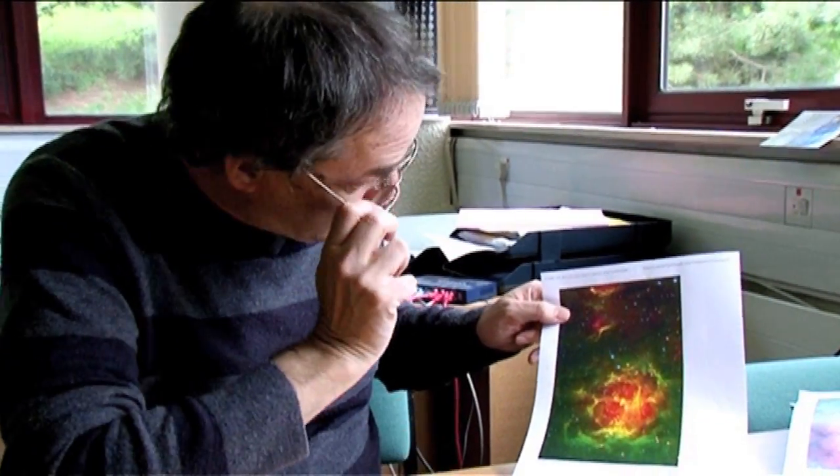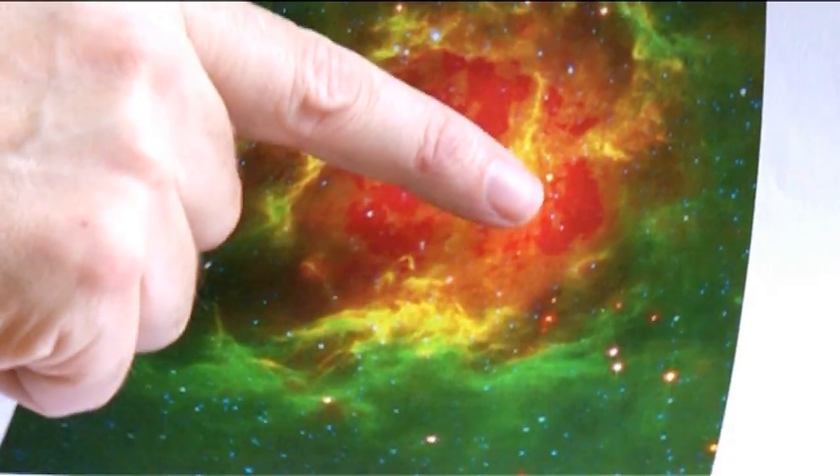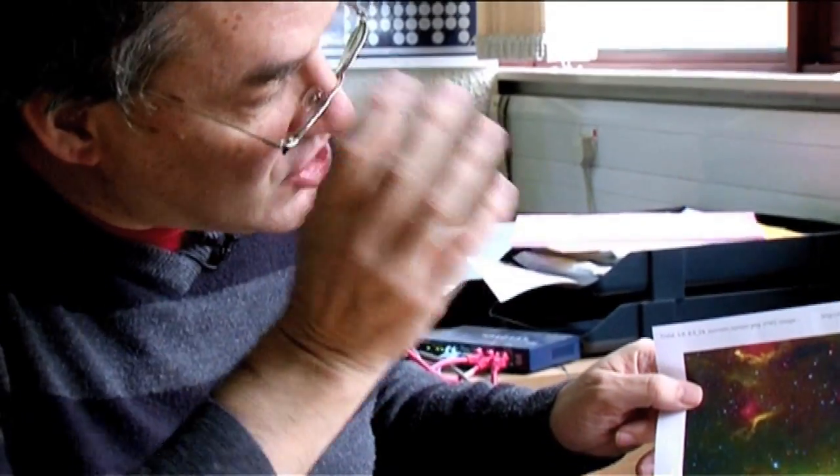And then actually rather harder to see, but maybe you can pick out a few of them, is that embedded within here, there are a whole bunch of little dots, which are actually the stars of the cluster itself. So with this infrared telescope, you can see through a lot of the obscuring material and actually see the cluster of stars inside.